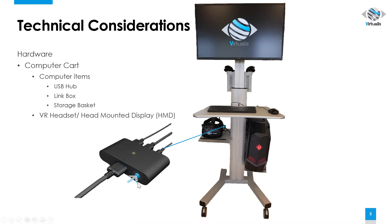There's a small blue button to turn on and off the link box. Once this is turned on, there's no need to turn this item off. This will allow the virtual reality headset to turn on and off with your computer.